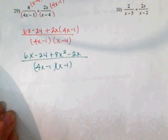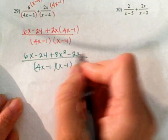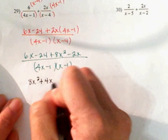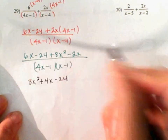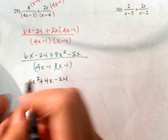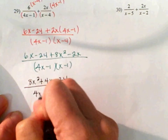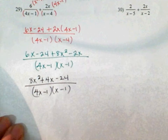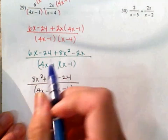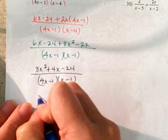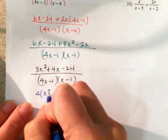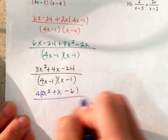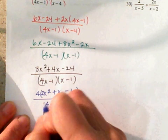Combine your like terms — let's go ahead and write x squared first. 8x squared plus 4x minus 24, all of that over 4x minus 1 times x minus 4. What can you factor out? I'm going to factor out a 4. And when I do, I have 2x squared plus x minus 6, all of that over 4x minus 1 times x minus 4.